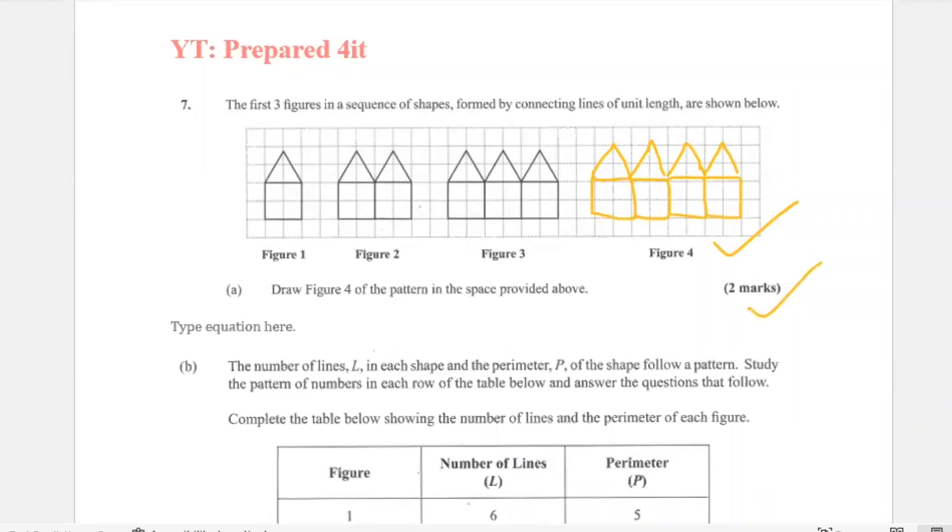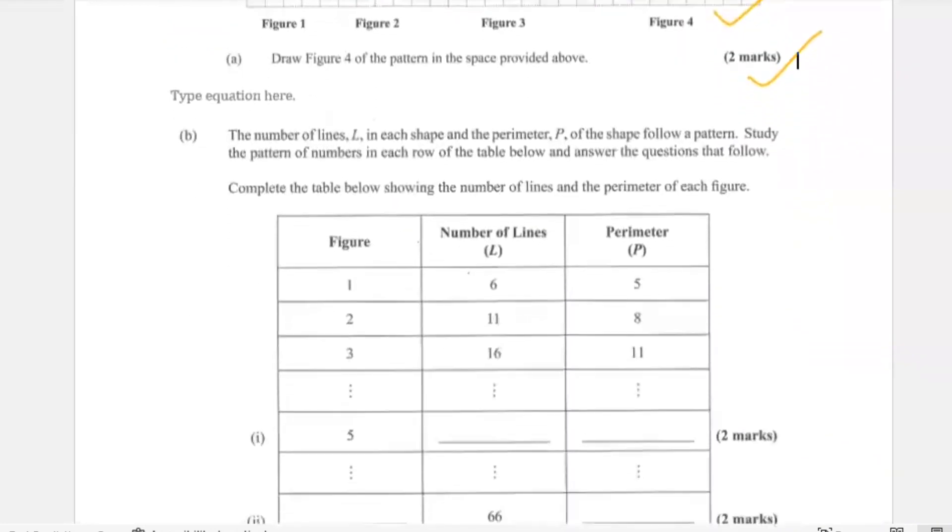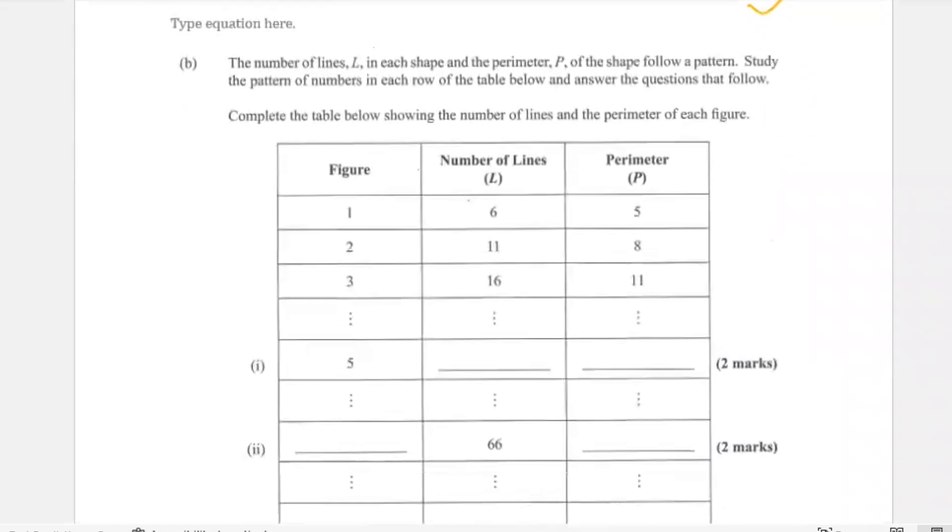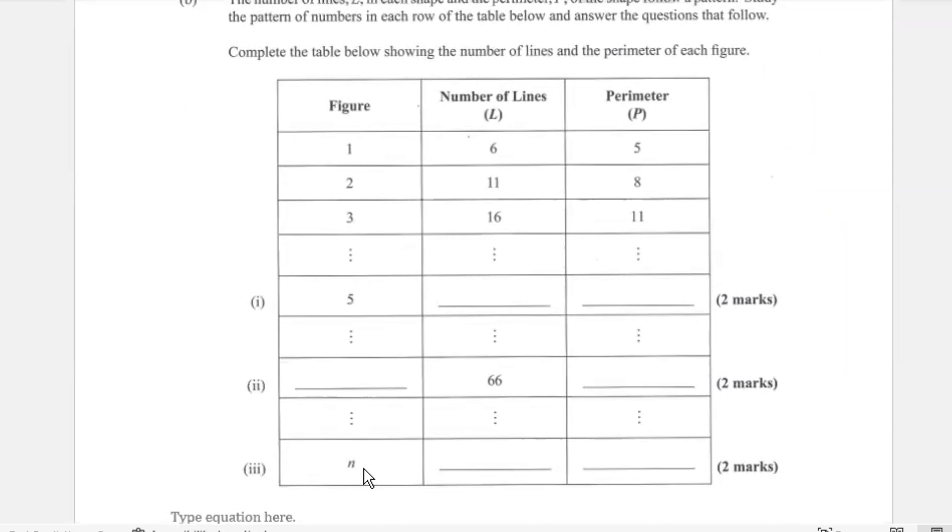This now is where the challenge usually is, but what I usually tell students is the first thing you should do is derive your formula, which is usually this n. Whenever you see n on your table, all they want you to do is write the formulas. Can anybody tell me what the formula for the number of lines is?